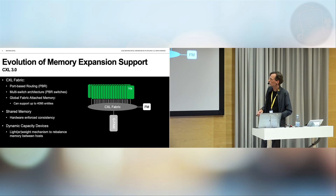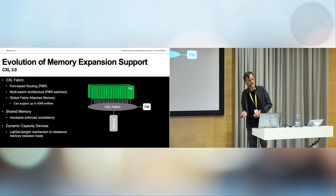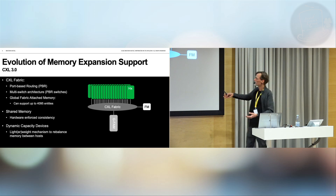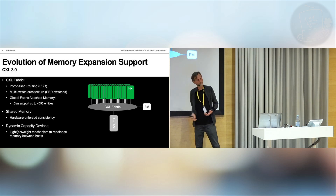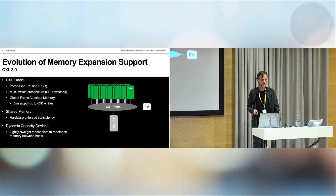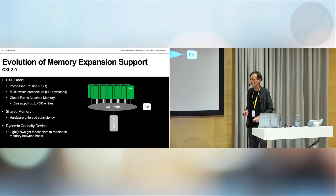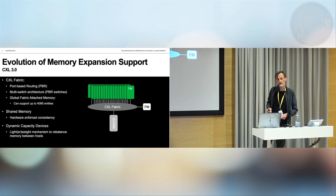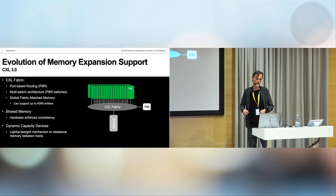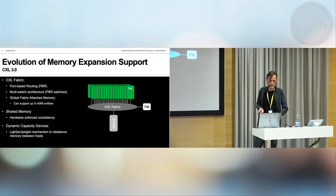Another thing introduced in CXL 3.0 is shared memory support with hardware-enforced consistency mechanisms. The intent is not to share all memory — it's more like small segments shared between hosts. We don't really know yet what the cost of this hardware-enforced consistency would be. Also introduced are dynamic capacity devices, where it should be easier to shrink and grow the actual allocated memory to a given device, making it easier to rebalance memory between hosts.